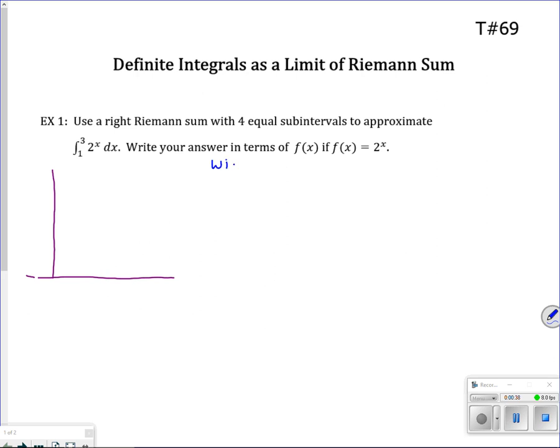Write your answer in terms of f of x if f of x is 2 to the x. So I know that you know how to find the actual value, but for the purposes of what we're doing today, I'm not wanting you to find the actual value, but let's just draw, as you have learned. I'm going to find, it says equal subintervals, so I am going to find the common width would be three minus one all over four. So again, I get a width of one half. Now, two to the x, I know that that is a function that looks like this, an exponential growth.